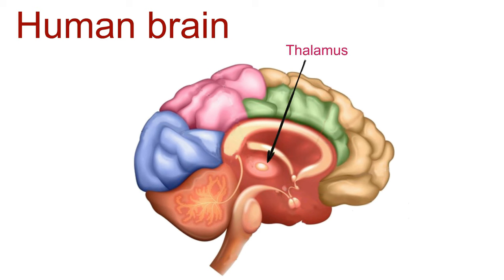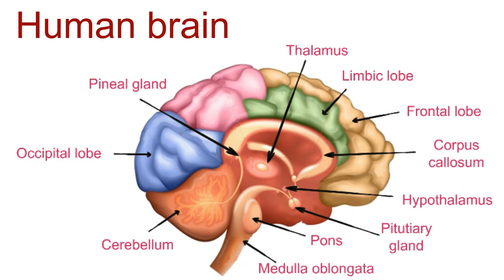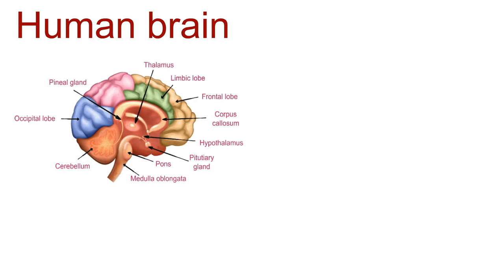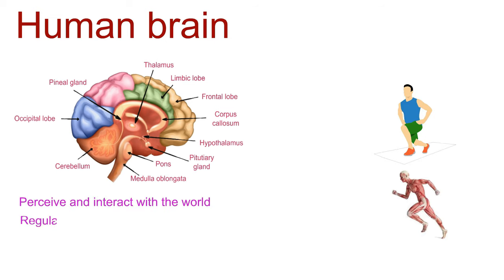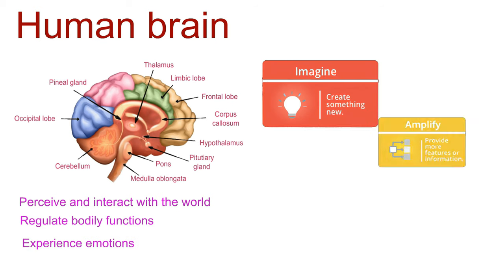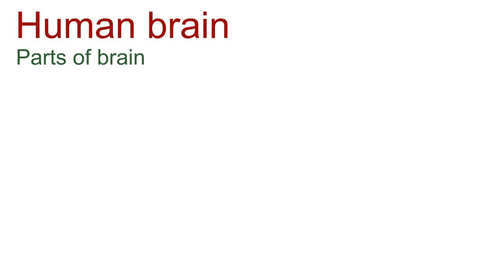The brain can be broadly divided into several major regions, each with its own set of structures and functions. These regions work in harmony, allowing us to perceive and interact with the world, regulate bodily functions, experience emotions, and engage in high-level cognitive activities.